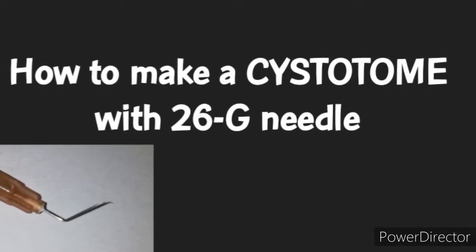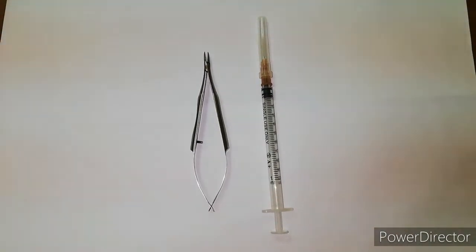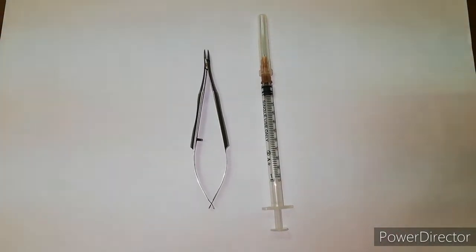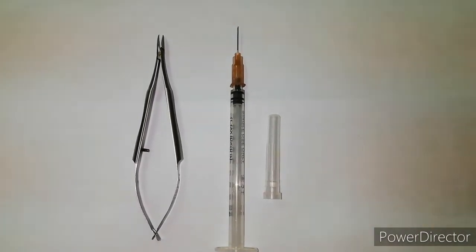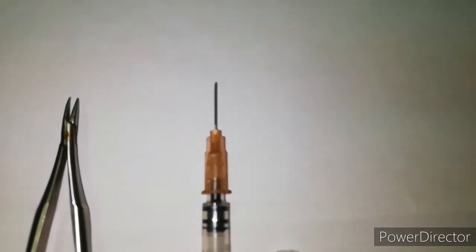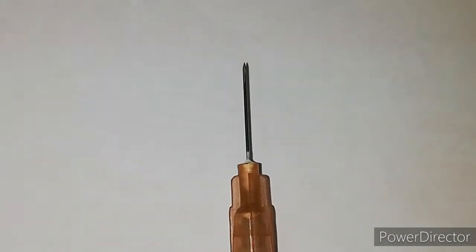How to make a cystotome with a 26 gauge needle. We need two instruments: one is a 26 gauge needle and the second is a small needle holder. We divide the tip of the needle into three parts: anterior one-third, middle, and posterior. We also divide the needle into three parts.